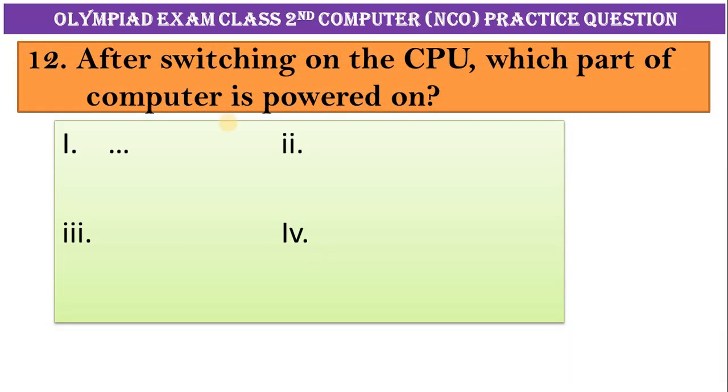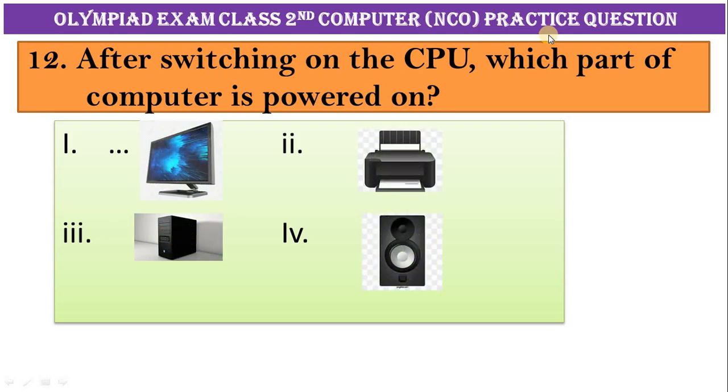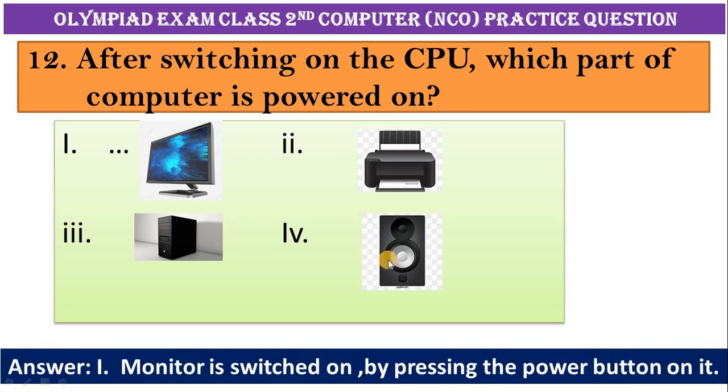Number twelve: after switching on a CPU, which part of the computer is powered on? A, monitor. Second, printer. Third, CPU. Fourth, speaker. Correct answer is option one, monitor. Monitor is switched on by pressing the power button on it.